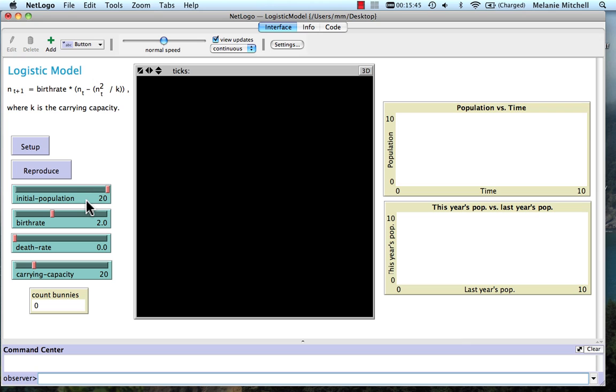We have an initial population slider, and sliders for birth rate and death rate. Notice that these are now real numbers, not integers.